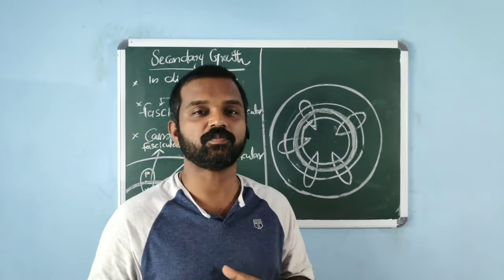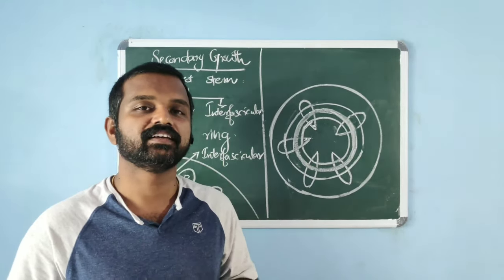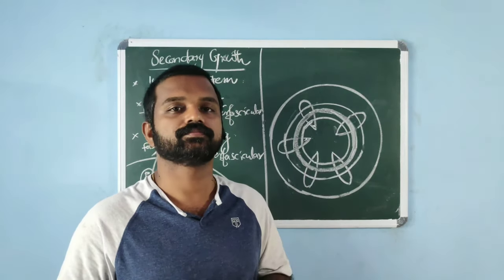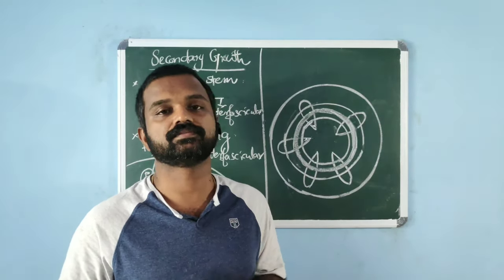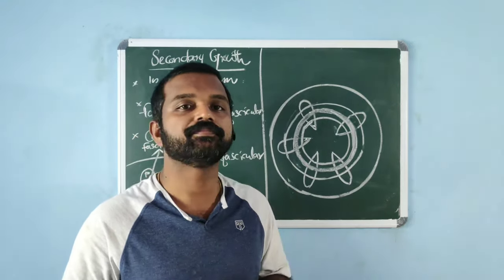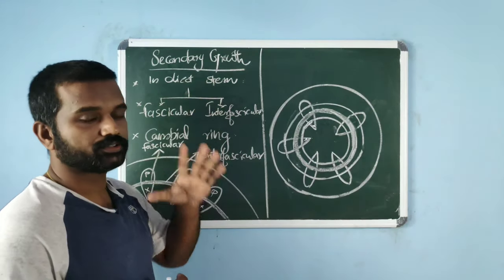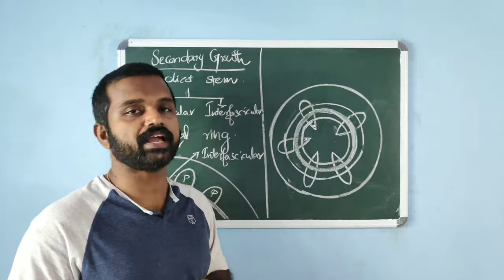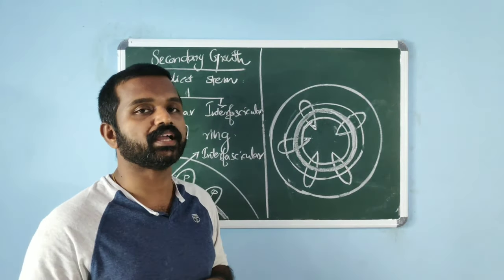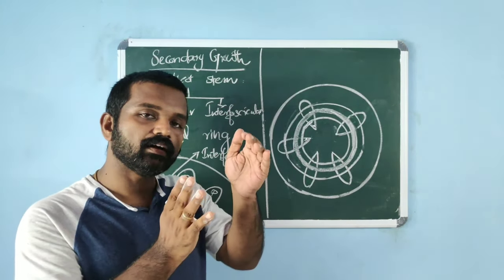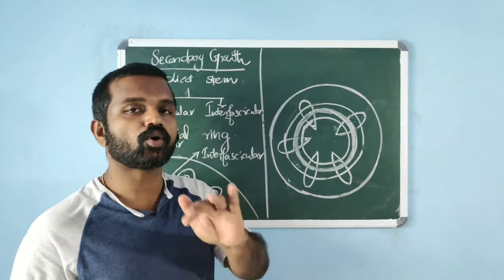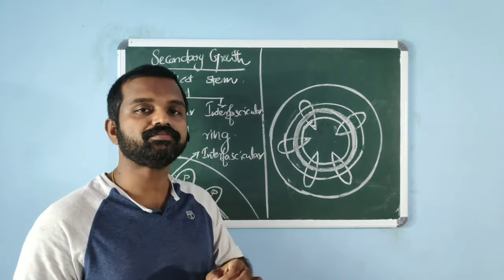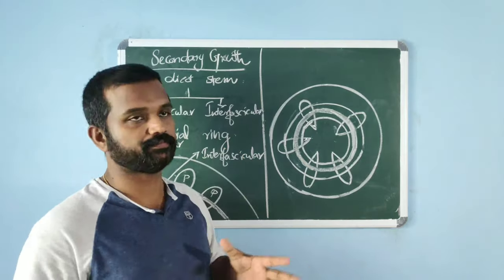Hi students, welcome to Smart Locus. In this video, we will see secondary growth in plants, a topic in plant anatomy. In dicots, secondary growth is due to the activity of vascular cambium and cork cambium. First, about the activity of vascular cambium.